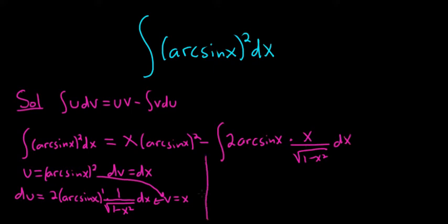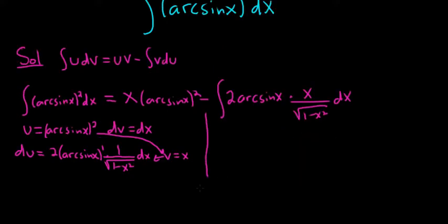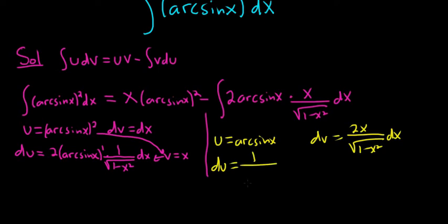I think we should use maybe parts again, so let's try using parts again. Let's let u be arcsine. And then dv is everything else, so dv will be 2x over this here. So du is 1 over the square root of 1 minus x squared dx. Now we're going to integrate this. When we do that, we'll get v here.